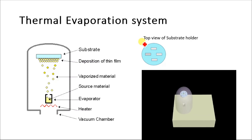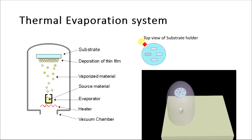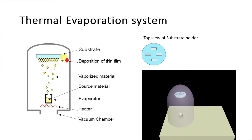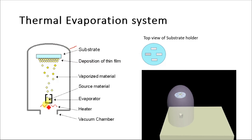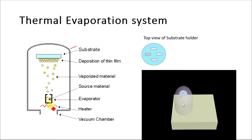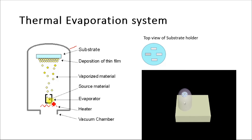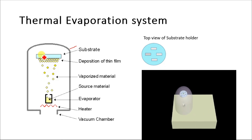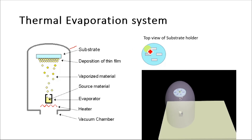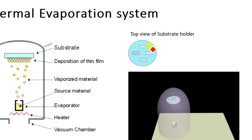Today we are going to discuss the thermal evaporation system. This diagram represents the thermal evaporation system and its different components. This is known as the vacuum chamber. Inside the vacuum chamber is a heater evaporator, sometimes known as boats. These boats are loaded with the source material, and the heater provides heat to the source material, which evaporates it and deposits it over the substrate.